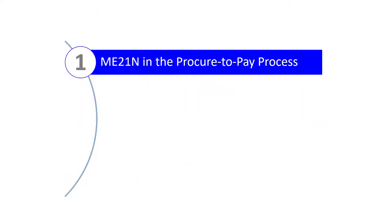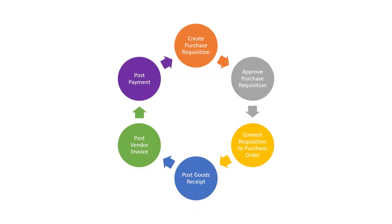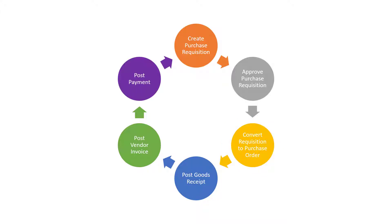Let's begin with where transaction ME21N fits in the Procure-to-Pay process. Transaction ME21N is used to create a purchase order, or, as is the case here, convert an approved purchase requisition into a purchase order. For the sake of simplicity in this video, we'll be converting the purchase requisition into a purchase order using transaction ME21N, Create Purchase Order. But note that there are other ways to facilitate this step, most notably using transaction ME59N, Automatic Generation of Purchase Orders.